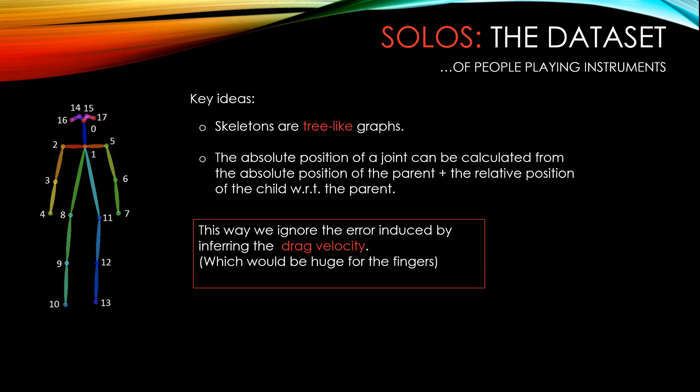But what does this complex sentence mean in practice? Well, imagine that OpenPose has failed to predict the position of the finger. If we interpolate the position of the finger with respect to the origin of coordinates, we could be introducing some error given the fact that the finger moves with the body. However, interpolating in relative coordinates means that we are interpolating the position of the finger with respect to the base of the finger as if this point were fixed. This way the interpolation is less prone to errors and keeps coherence.